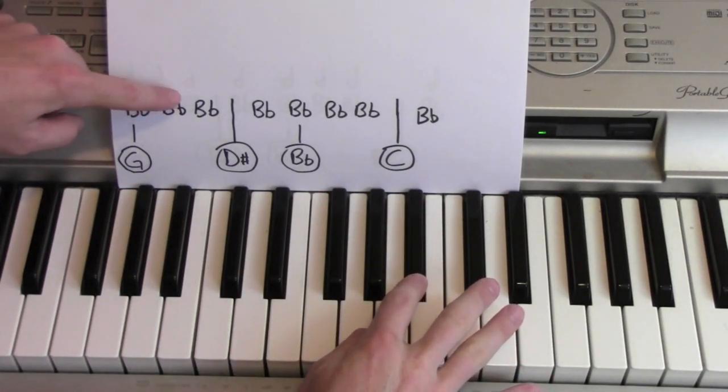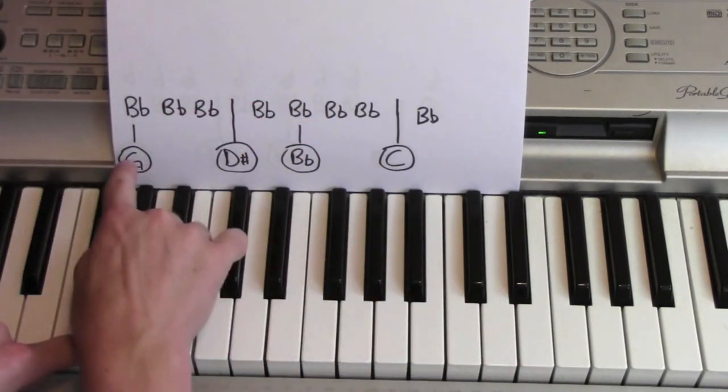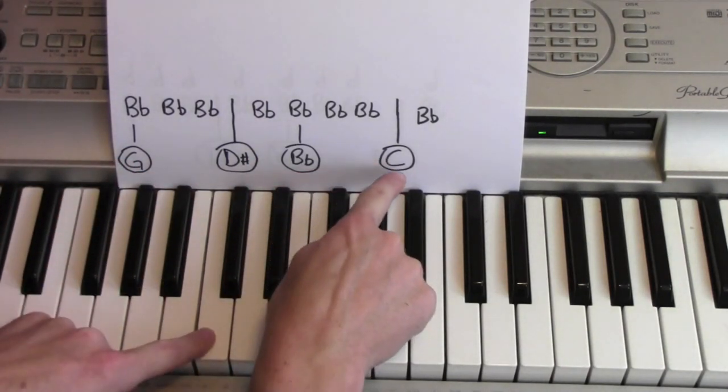So the right hand is just repeating that Bb, Bb, Bb, Bb, over and over again. And then left hand is going from a G, to a D-sharp, to a Bb, to a C.